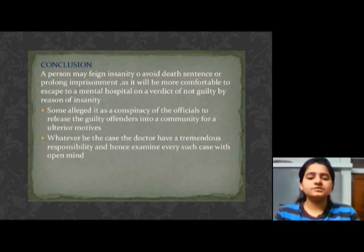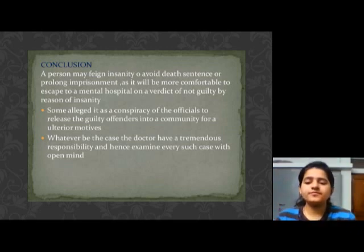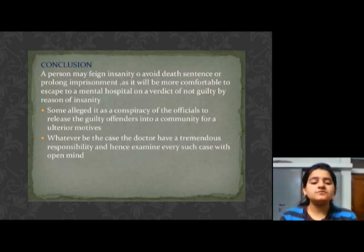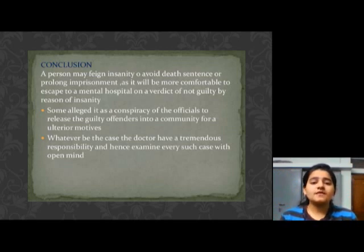Now, coming to the conclusion: a person can make a fake insanity claim to avoid life imprisonment or death sentence, because living in a mental hospital — not guilty of offenses by reason of insanity — is far more comfortable than life imprisonment. People make many conspiracies to release a guilty offender into the community for different motives. Doctors have a lot of responsibility, so they have to examine every case with a lot of care and an open mind, so that no conspiracy can let an offender live in the community, because it can be very dangerous.